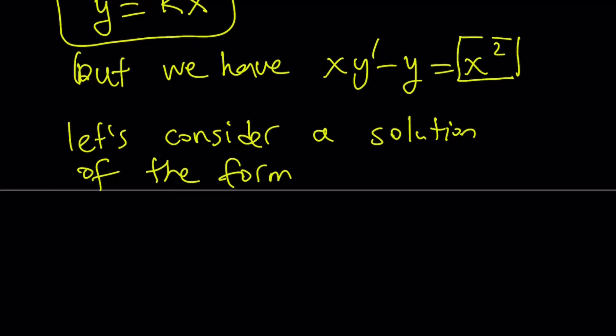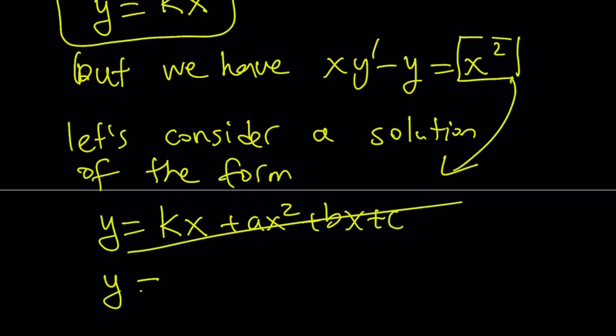Now, normally, you would assume something like this. You would have the kx, which is always a solution because it makes the right-hand side equal to zero. You would add something like ax squared plus bx plus c because of the presence of the quadratic term. But since you already have a linear term like kx, you don't really need to do this. You can just go ahead and assume something like this.